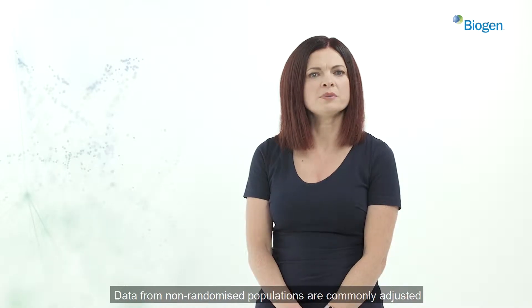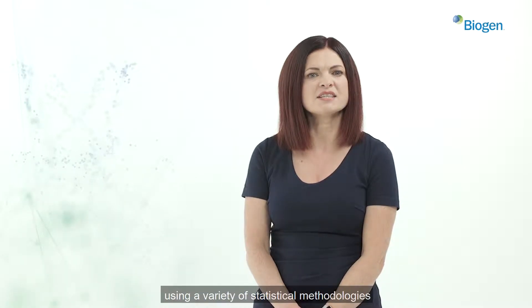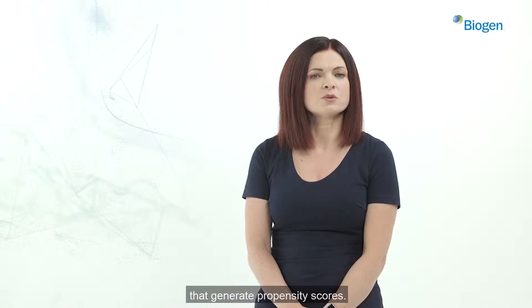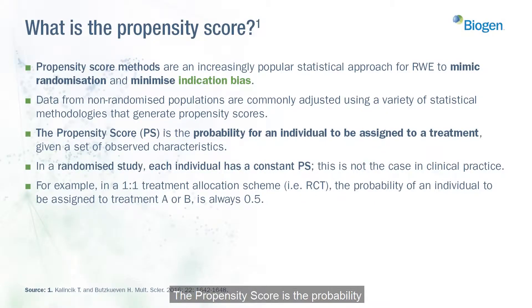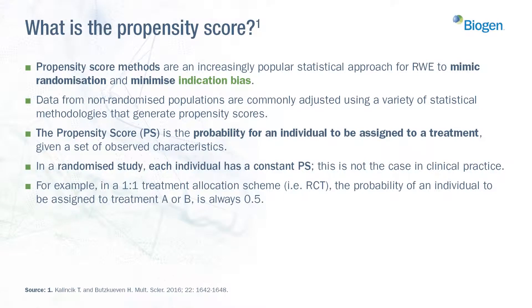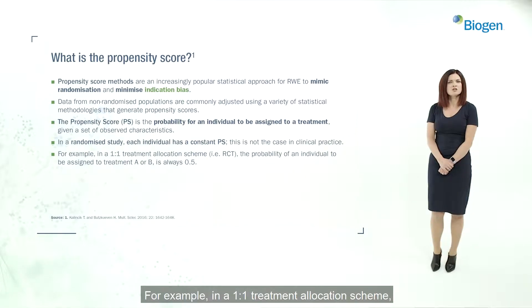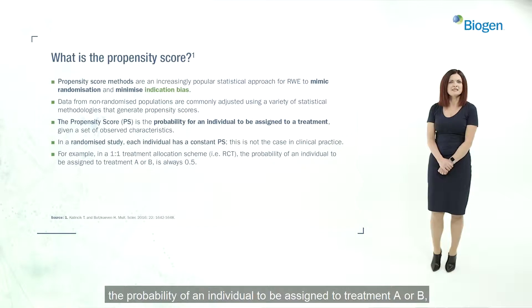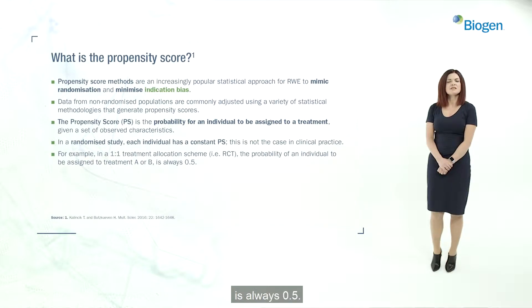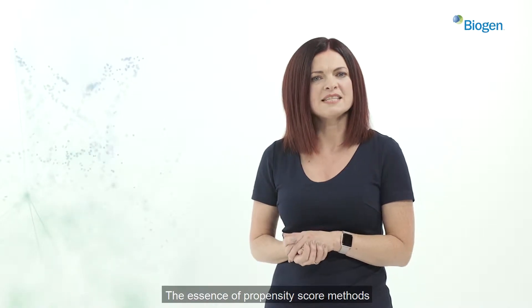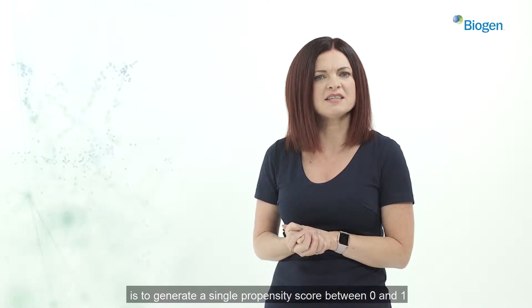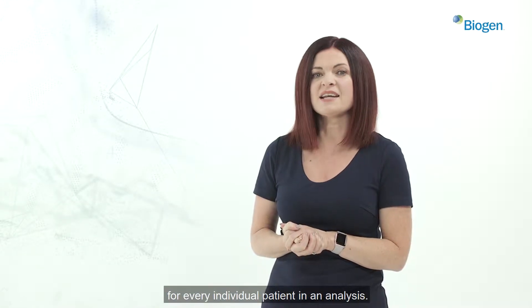Data from non-randomised populations are commonly adjusted using a variety of statistical methodologies that generate propensity scores. The propensity score is the probability for an individual to be assigned to a treatment given a set of observed characteristics. In a randomised study, each individual has a constant propensity score — this is not the case in clinical practice. For example, in a one-to-one treatment allocation scheme such as a randomised control trial, the probability of an individual being assigned to treatment A or B is always 0.5. The essence of propensity score methods is to generate a single propensity score between 0 and 1 for every individual patient in an analysis.